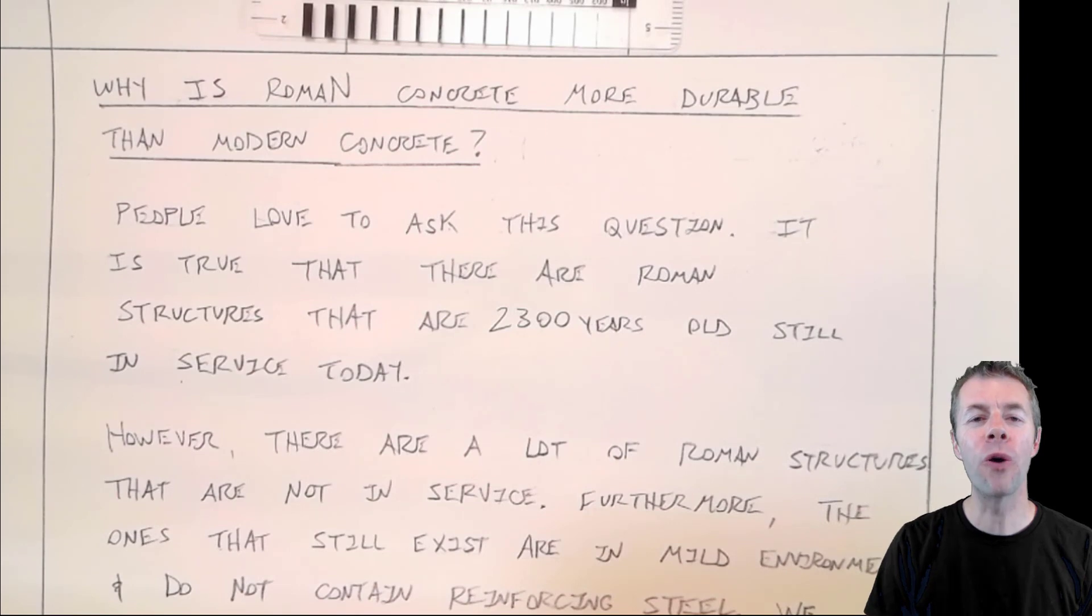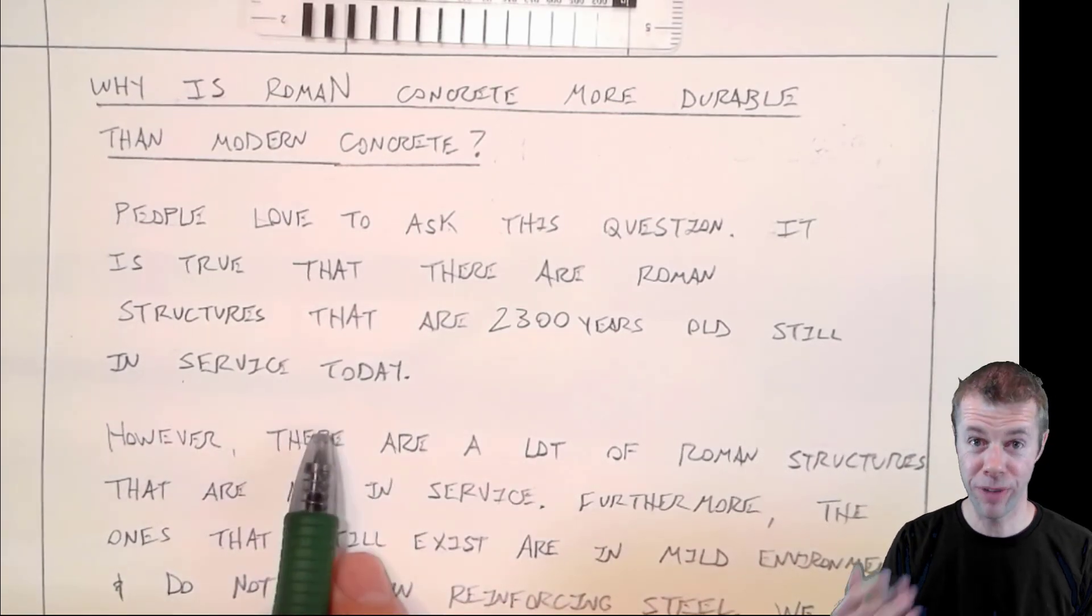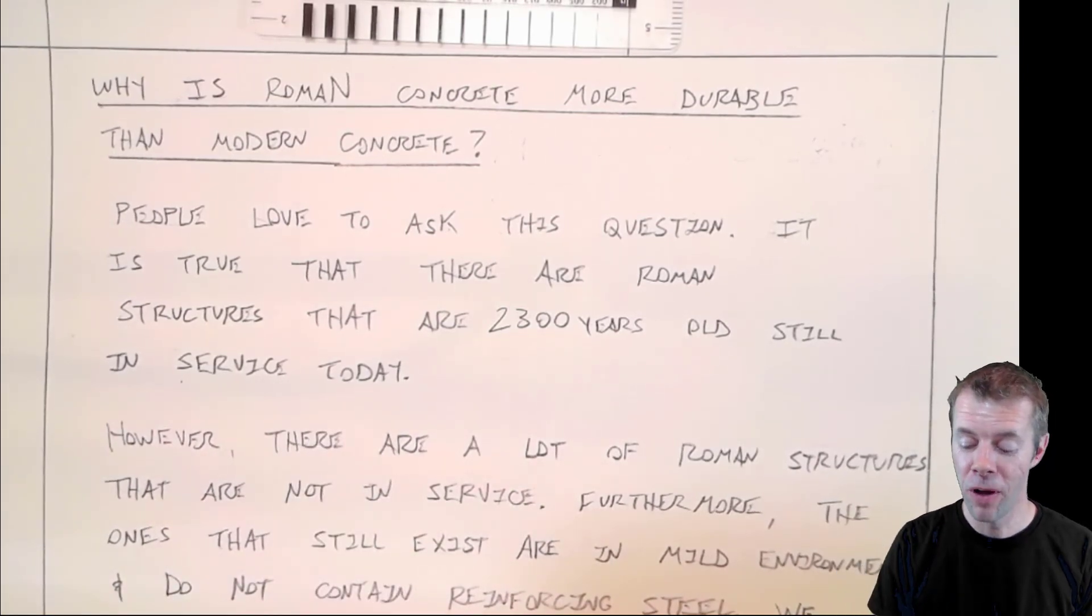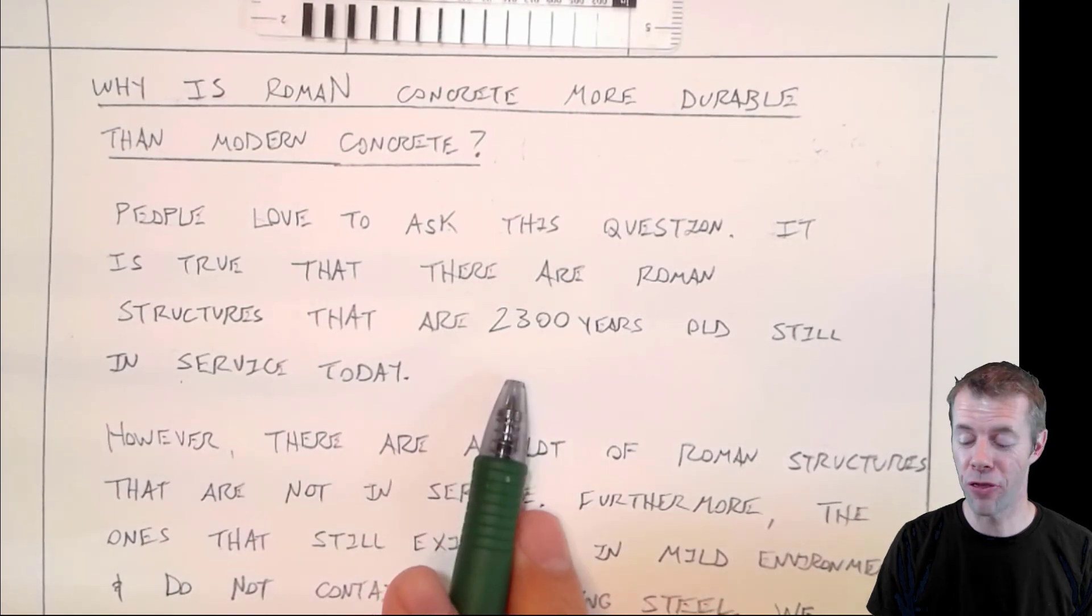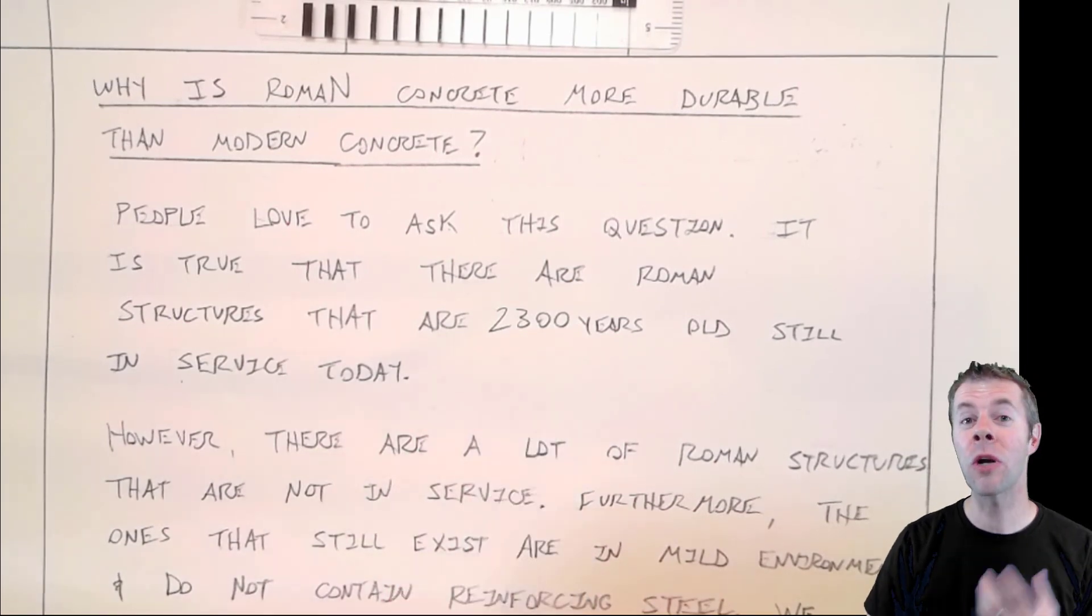So why is Roman concrete more durable than modern concrete? That's a question I get a lot. And it's true that there are definitely Roman structures that are really old. I mean, there's some that are over 2,300 years old, and they're still in service today. And they're so cool. Why don't we look at them?